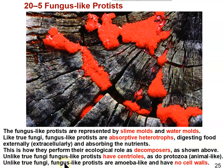Unlike true fungi, fungus-like protists are also amoeba-like. The individual cells are like amoeba, and they have no cell walls. There is an exception — the water molds actually do have cell walls — but in general, the slime molds and water molds are more like amoeba, animal-like protists like protozoa, than they are like the plant-like protists, the algae. And they're not like true fungi.